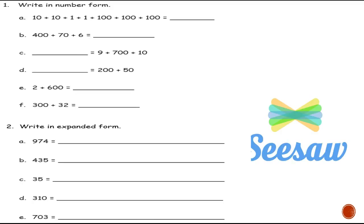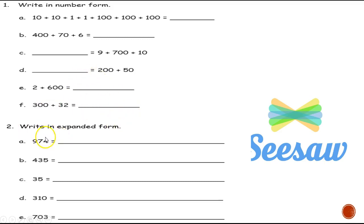Now it's your turn. This is our Seesaw assignment. You're going to write problems a, b, c, d, e, and f and write your answers. You're going to write out these numbers in expanded form. Good luck!